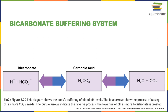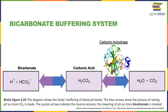The bicarbonate buffering system is another important pH buffer in the body. Bicarbonate can accept a hydrogen ion to form carbonic acid. This system accounts for the majority of the pH buffering capacity of the extracellular fluids, which have a relatively low protein concentration. The bicarbonate buffering system is also very important for the ability of the respiratory and urinary systems to regulate the pH balance of the body, because carbonic acid can be converted to water and carbon dioxide. The enzyme carbonic anhydrase catalyzes this reaction that converts carbonic acid to water and carbon dioxide, as well as the reverse reaction where carbon dioxide and water can be converted to carbonic acid.